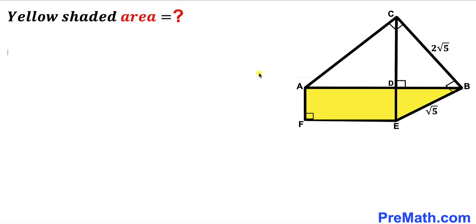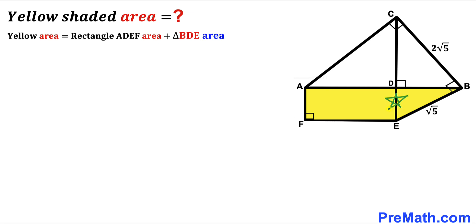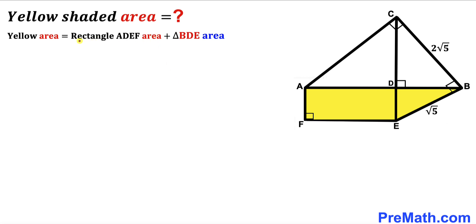Let's get started. Since we are interested in calculating the area of the whole yellow shaded region, we can see that the yellow shaded region area equals the rectangle ADEF area plus the area of right triangle BDE. So our task is to calculate the area of rectangle ADEF and the area of triangle BDE.